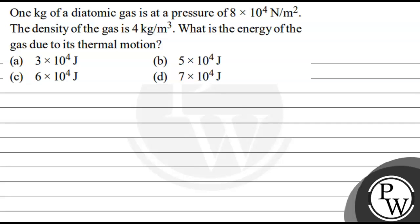Hello, let's read the question. The question is 1 kg of diatomic gas is at a pressure of 8 into 10 to the power 4 Newton per meter square. The density of the gas is 4 kg per meter cube. What is the energy of the gas due to its thermal motion?